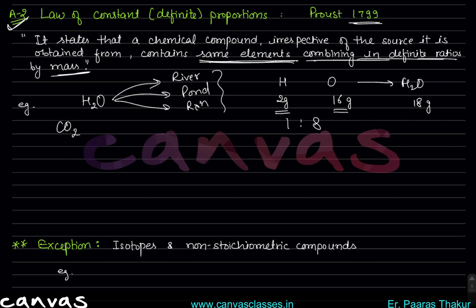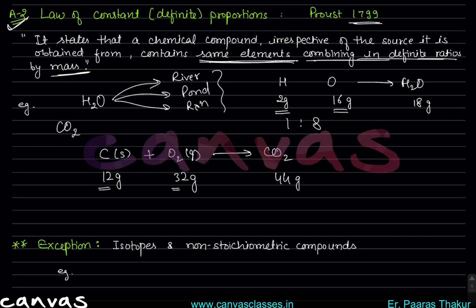For the law of definite proportion example with CO2: carbon (solid) + O2 (gas) → CO2. One mole of carbon has mass 12 gram, and O2 gives 32 gram, so 44 gram CO2 is formed. So carbon and oxygen are combining in the ratio 12:32. If we simplify by dividing by 4, that is 3:8. So 3 gram carbon always combines with 8 gram oxygen.